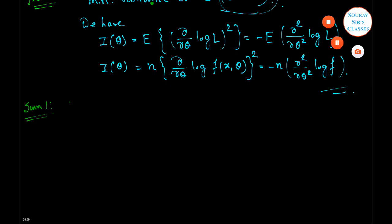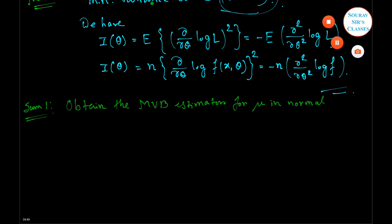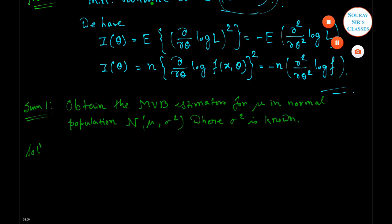Here is sum number one: Obtain the MVB estimator for mu in the normal population N(mu, sigma-squared), where sigma-squared is known. Now here is the solution.